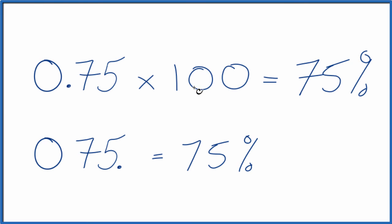So you can multiply by 100 to get your percent, multiply the decimal times 100, or you could move the decimal point two places to the right, like we did here.